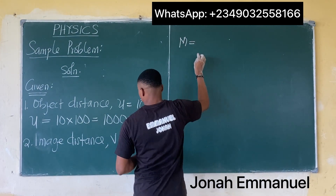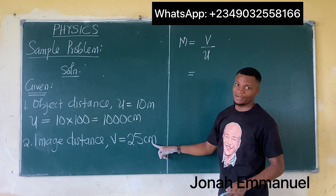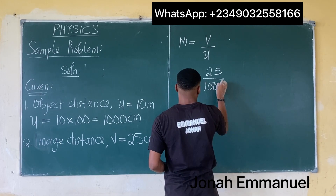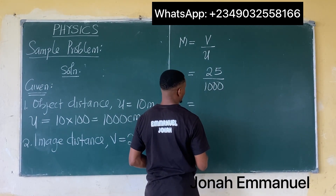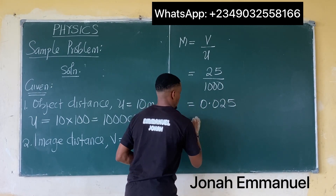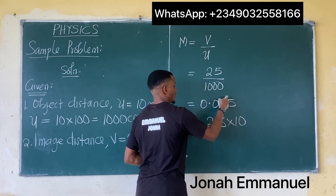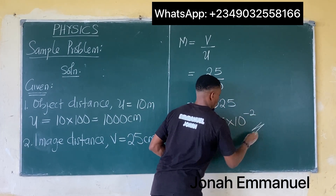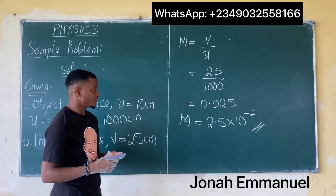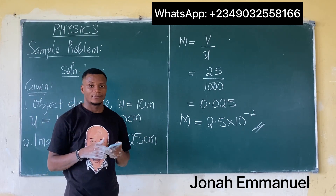We have to find magnification. We know that magnification M is equal to image distance over object distance. The image distance is already in cm, so it becomes 25 over 1000, which gives 0.025. In index form that's 2.5 times 10 to the power minus 2. Magnification has no units, so the answer is 2.5 times 10 to the minus 2.